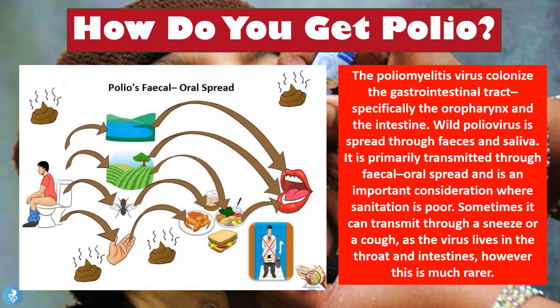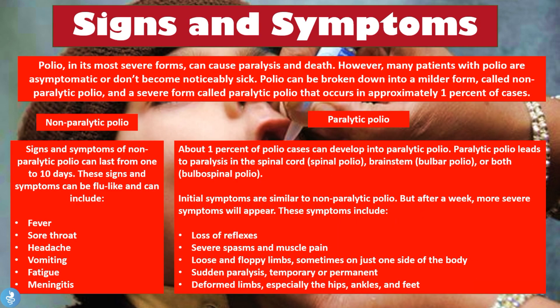Now let's look at signs and symptoms of polio. In its most severe forms, polio can cause paralysis and death. However, many patients are asymptomatic or don't become noticeably sick. Polio can be broken down into a milder form called non-paralytic polio and a more severe form called paralytic polio, which occurs in approximately 1% of cases. Signs and symptoms of non-paralytic polio can last from 1 to 10 days and are often flu-like, including fever, sore throat, headache, vomiting, fatigue, and meningitis — which is inflammation of the meninges, the outer coverings of the brain.